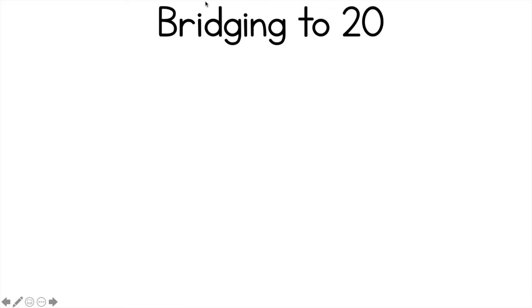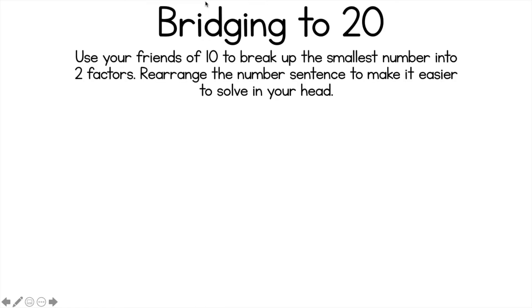Good morning boys and girls, Miss Aisbet here. Today we're going to learn how to add by using the bridging to 20 strategy. So bridging to 20 means using your friends of 10 to break up the smallest number into two factors. Rearrange the number sentence to make it easier to solve in your head and it'll make sense in just a minute.